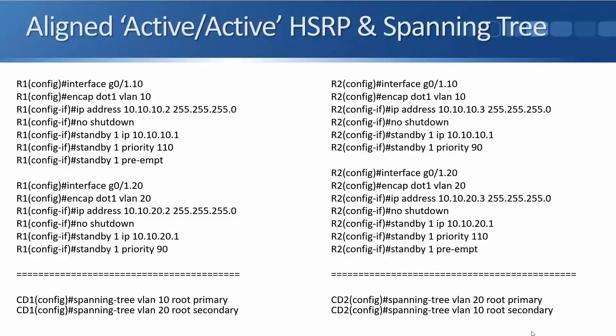For VLAN 20, it's really just the mirror opposite configuration. On R2, I give it IP address 10.10.20.3 and I've set it with standby 1 priority 110 and standby 1 preempt. For R1, I give it the physical IP address 10.10.20.2 with priority 90. The virtual IP — the gateway address — I'm using is 10.10.20.1. So R2 will be the HSRP active gateway for VLAN 20 using IP address 10.10.20.1.